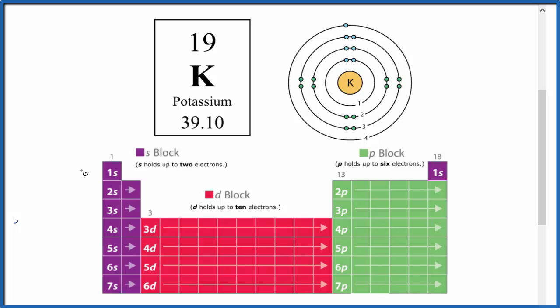In the first period, this is the first energy level here. We have 1, 2 electrons. So we're going to put those right here. Here's the first energy level. There's those 2 electrons. Then that energy level, it's full.